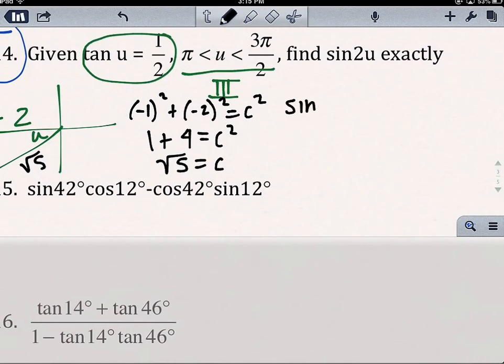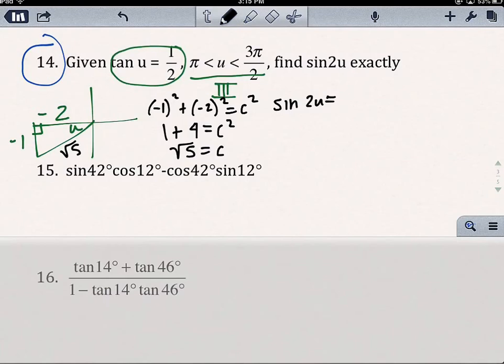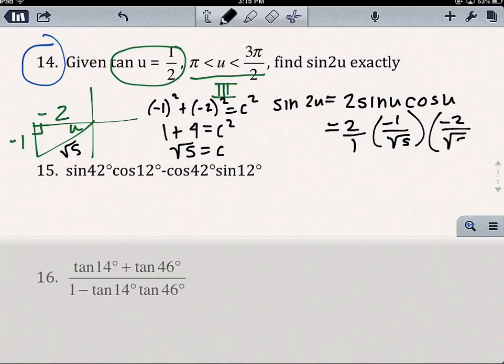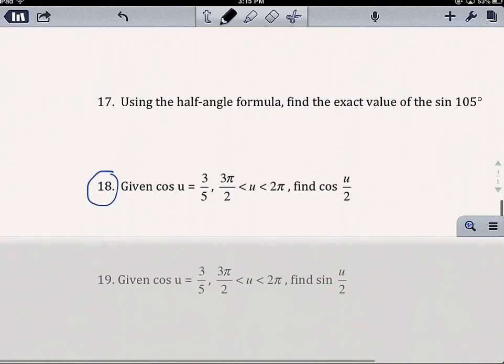So, now I'm going to use the formula. So, sin(2u) or whatever angle is, is 2sin·cos. I can use this triangle to help us figure out these values. So, I'm going to write 2 times, sine is opposite over hypotenuse, cosine is adjacent over hypotenuse. And I did not rationalize these yet. And that's okay, because when we multiply, they're going to cancel out. So, 2 × (-1) × (-2) is positive 4. 1 × √5 × √5 is 5.